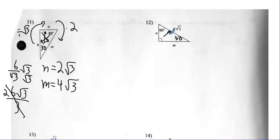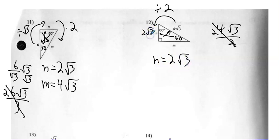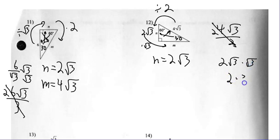Number twelve — another 30-60-90, but I have the hypotenuse. Always go to the short leg first — I'm getting smaller, so I divide. From the hypotenuse to the short leg, simply divide by two. So four radical three divided by two gives N equal to two radical three. Now how do I go from the short leg to the long leg? I'm getting bigger, so I multiply by radical three. Two radical three times another radical three is two times three. So M is six.